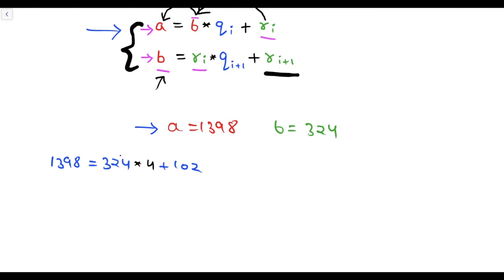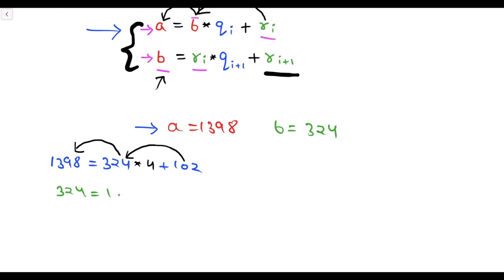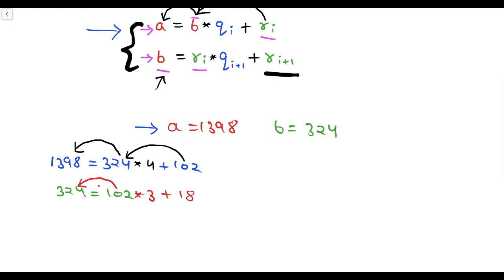Now 324 will transfer to the a position and 102 is transferred to the b position. So the new a is 324 and the new b is 102. Then the new a is 102 and the new b is 18. This 102 will transfer to the a position and 18 will transfer to the b position.